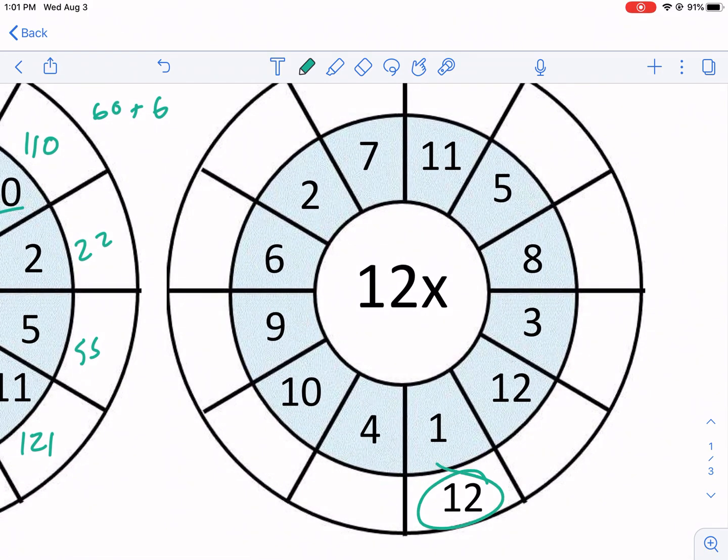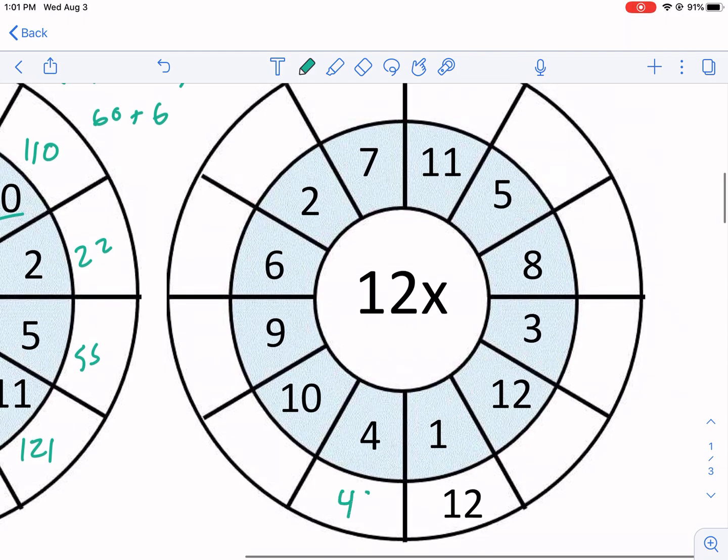And we can start anywhere, it starts I guess right here. So we do 12 times 4. And you're just going to have to probably memorize these. I don't know of a better way to understand these problems. We get 12 times 10, 120. That one you should know.